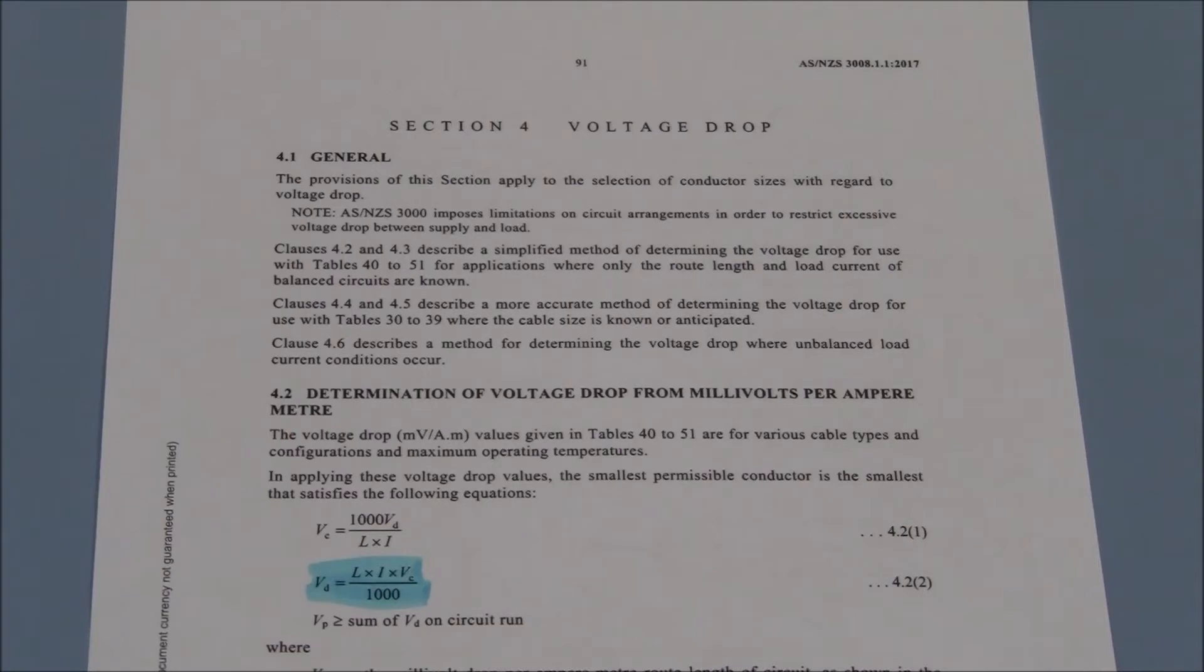We are searching for a value of actual voltage drop. So we will use the equation: voltage drop equals length multiplied by current multiplied by the value of VC all divided by 1000.